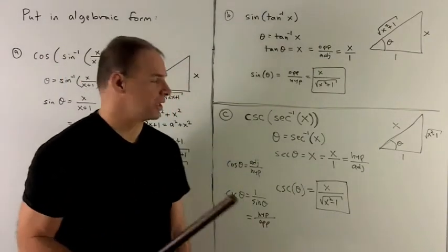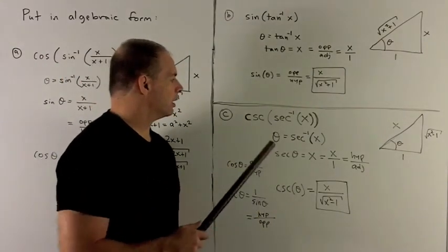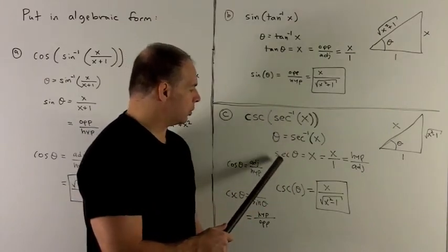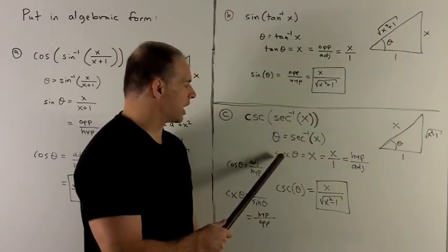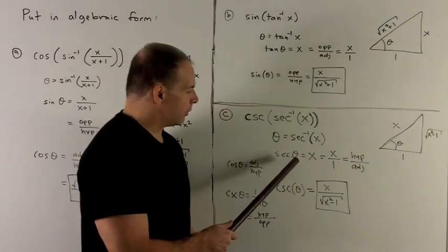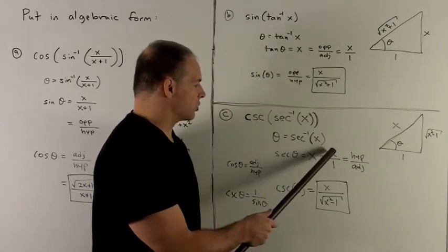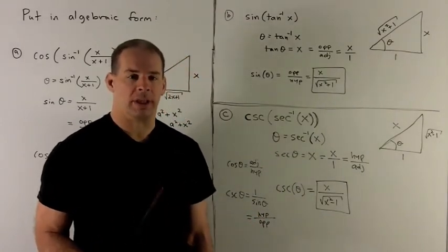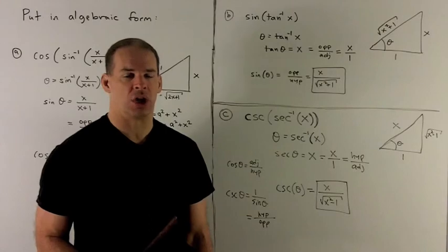For a final one, we'll do one using secant and cosecant. So I set the inside equal to theta. I apply my usual language trick. We move secant to the other side. Then we know we're just given x. So I'm going to write x as x over 1.